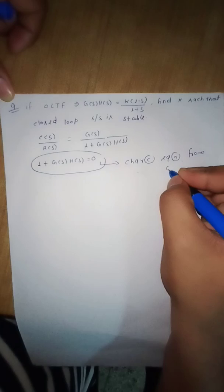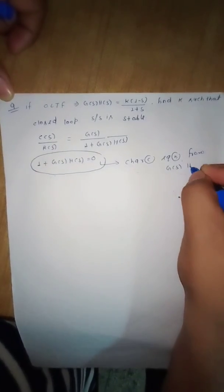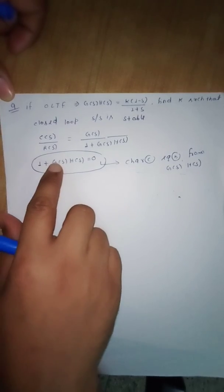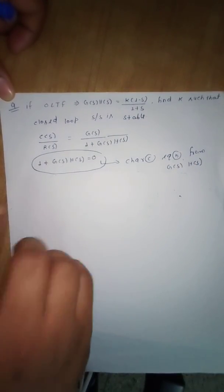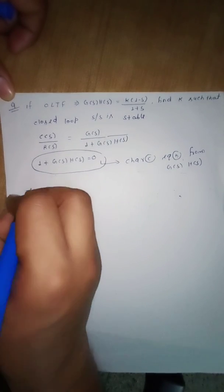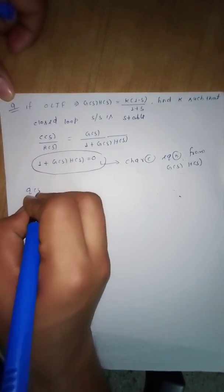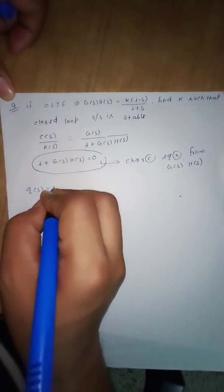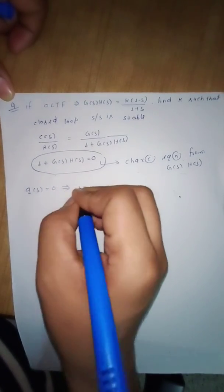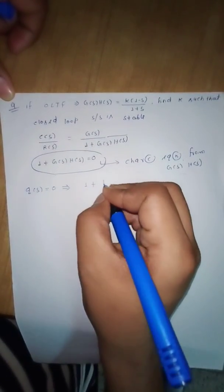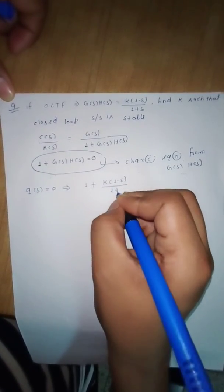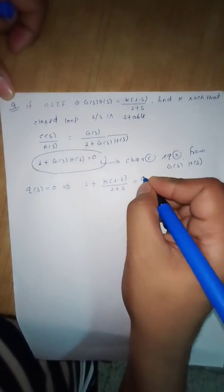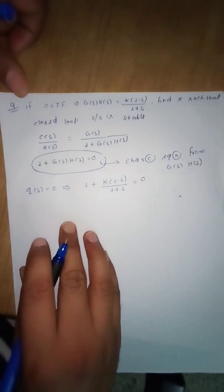So this is the formula for calculating the characteristic equation from G(s)H(s). Here we have G(s)H(s) equal to k(1 - s) over (1 + s). Let us calculate the characteristic equation using 1 + k(1 - s) divided by (1 + s) equal to 0.